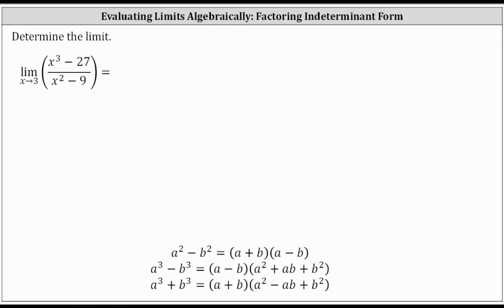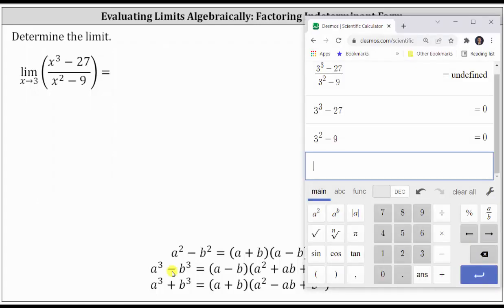So to begin, let's see what happens when we perform direct substitution. Notice when substituting three for x, the calculator shows undefined. If we look at the numerator and denominator separately, we have the indeterminate form of zero divided by zero.